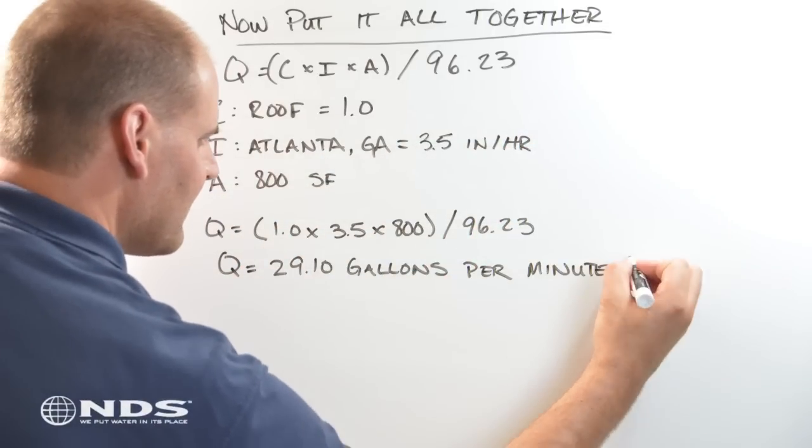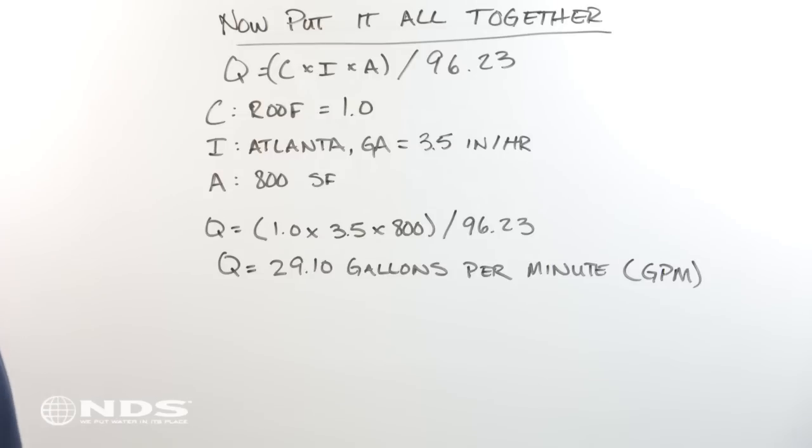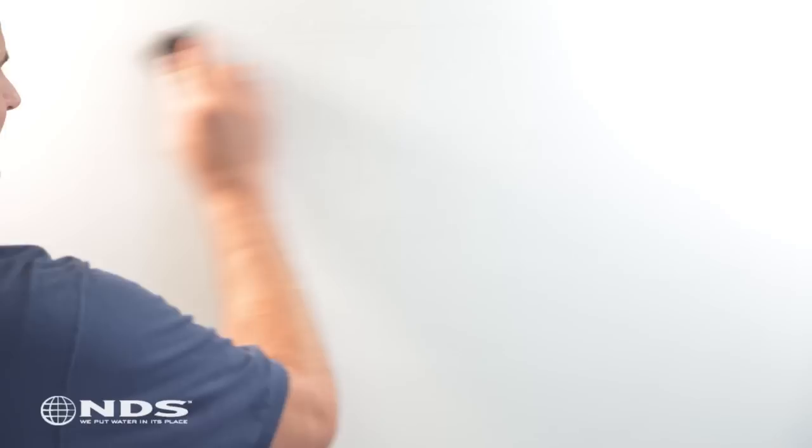Multiplying this out, we can expect to get 29.10 gallons per minute of water from this portion of the roof in the 100-year storm event.